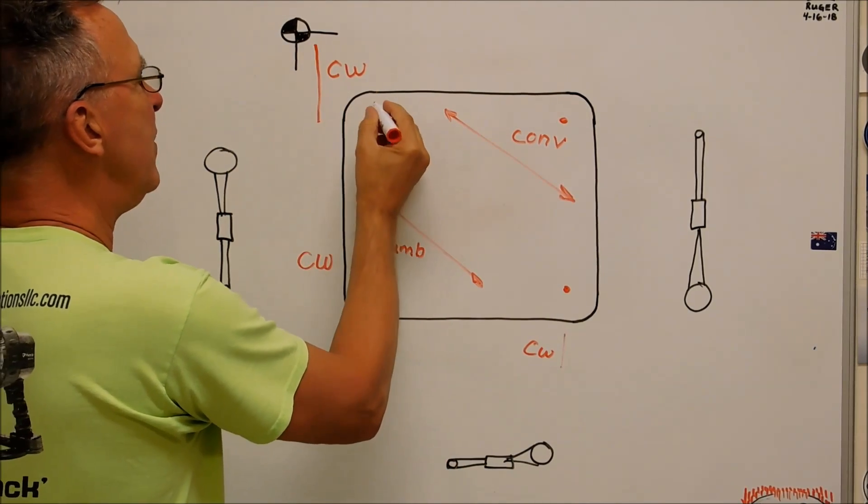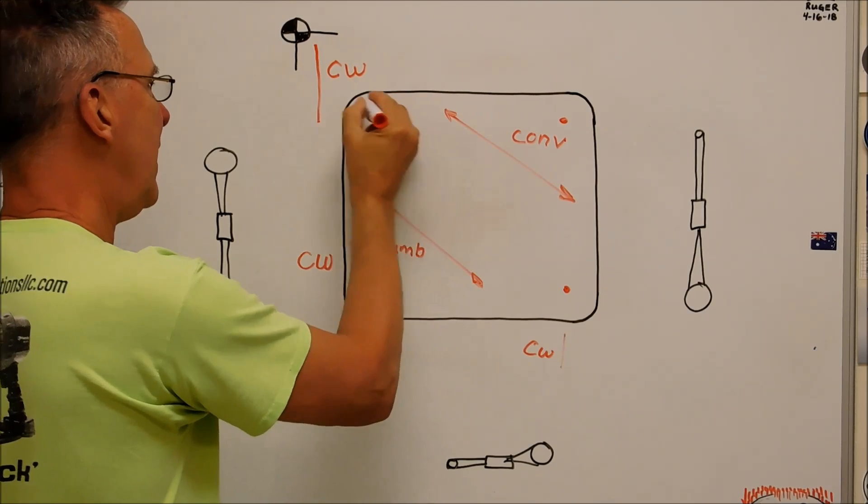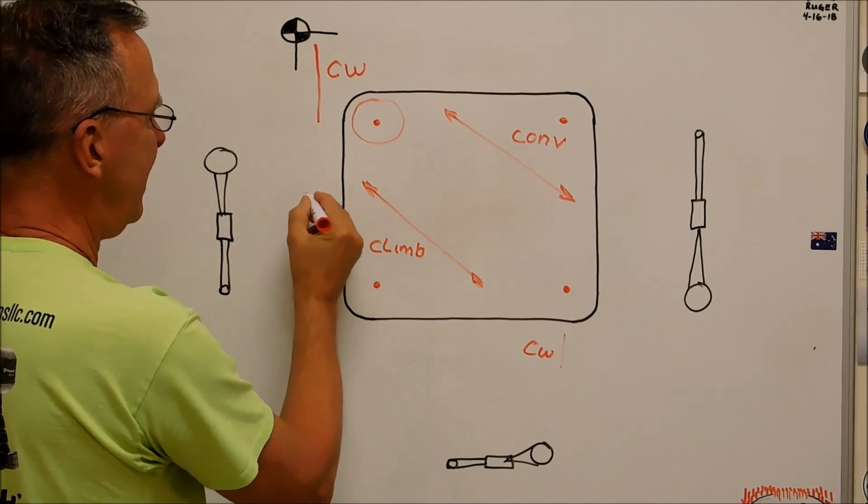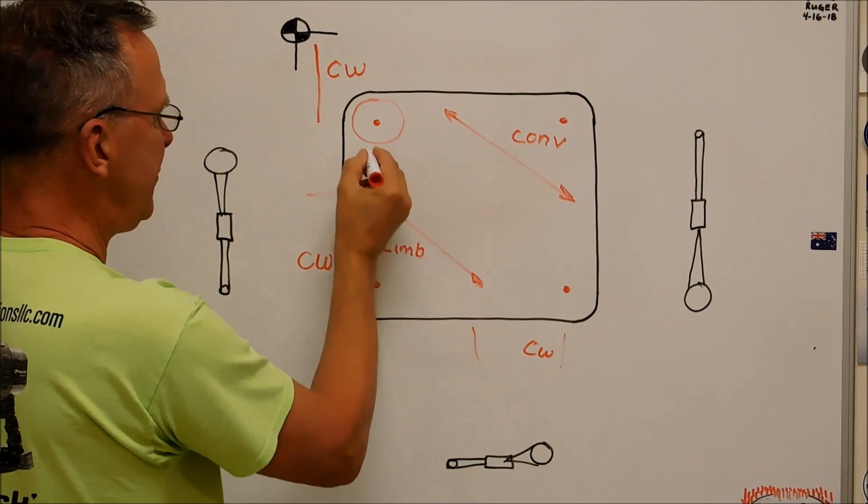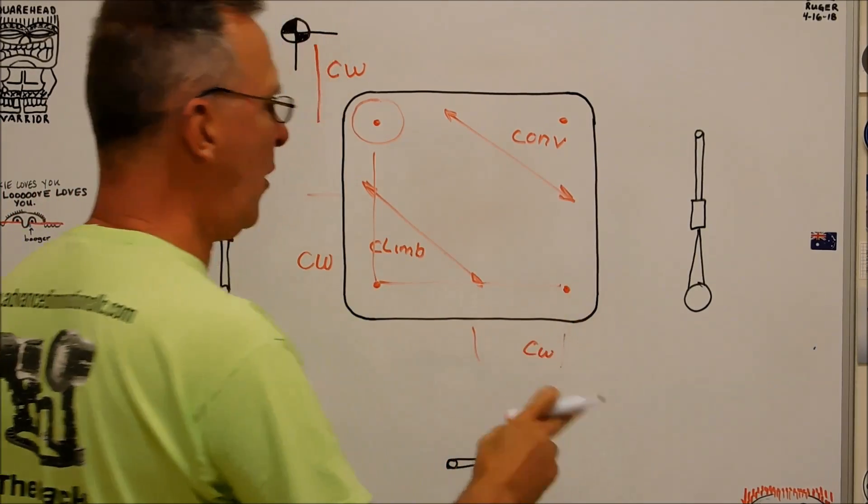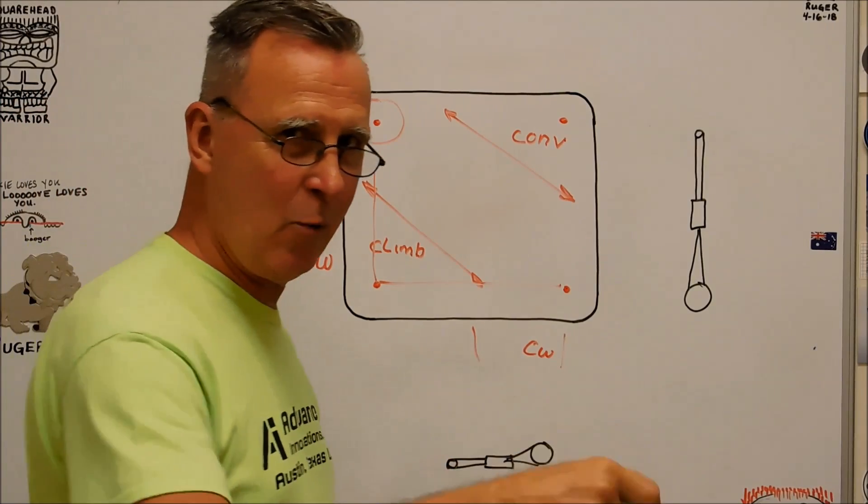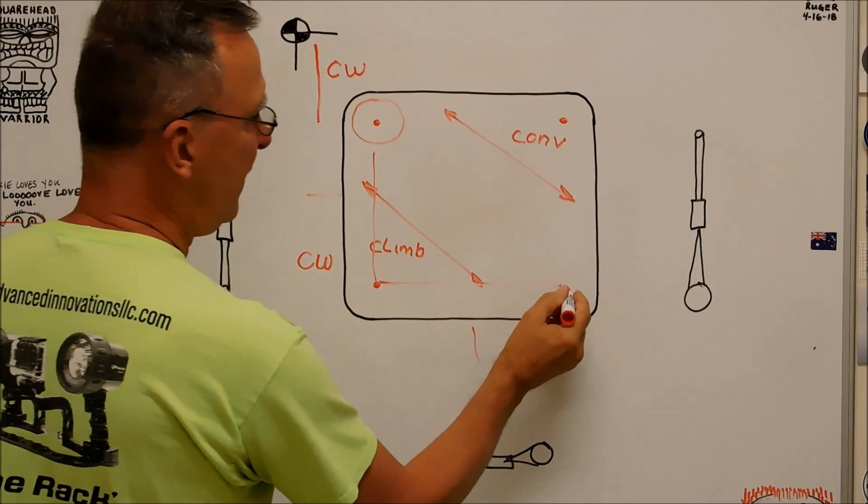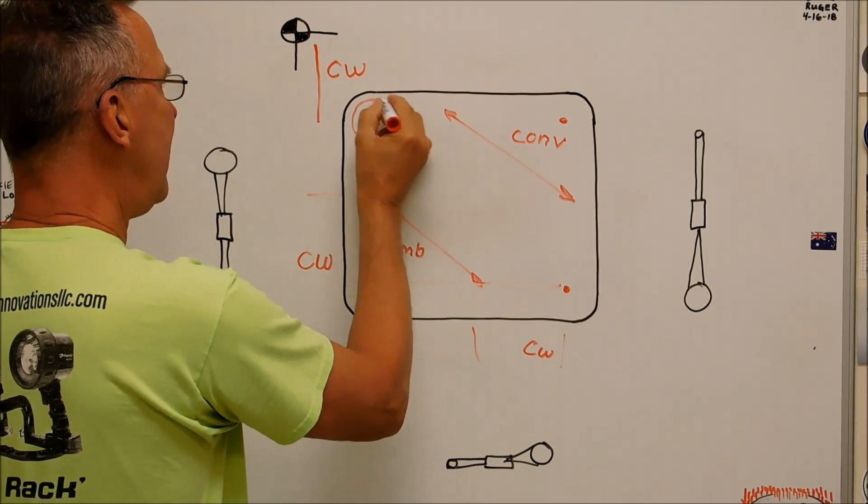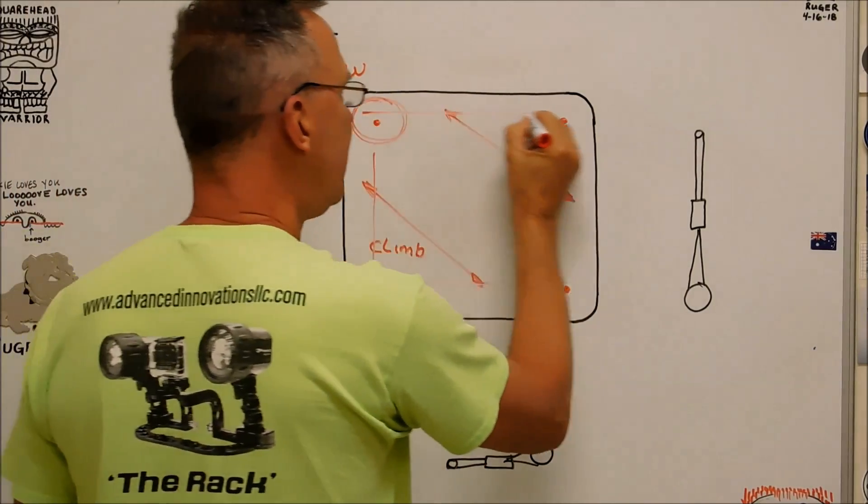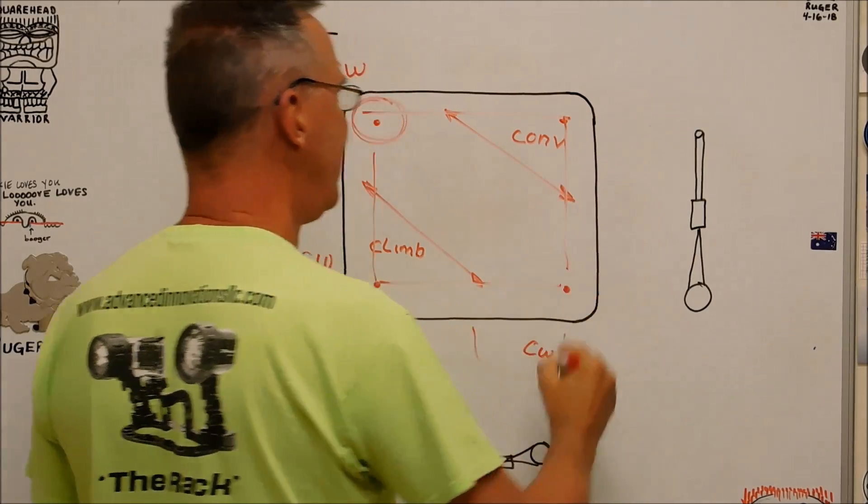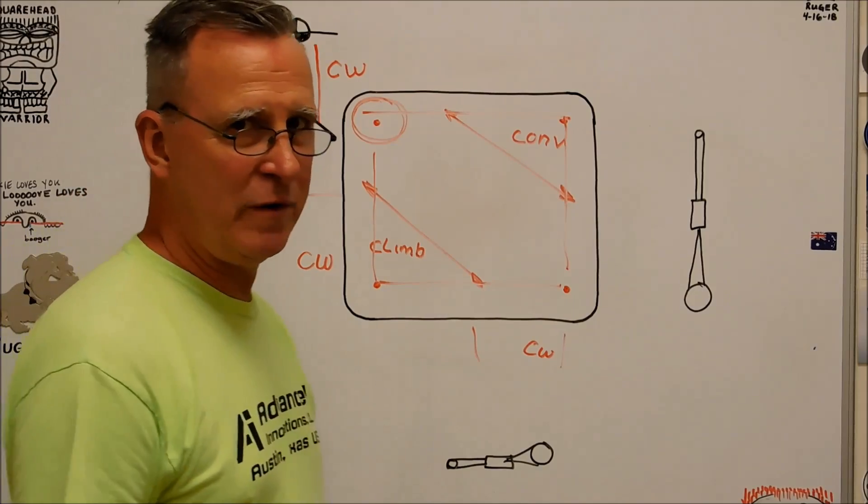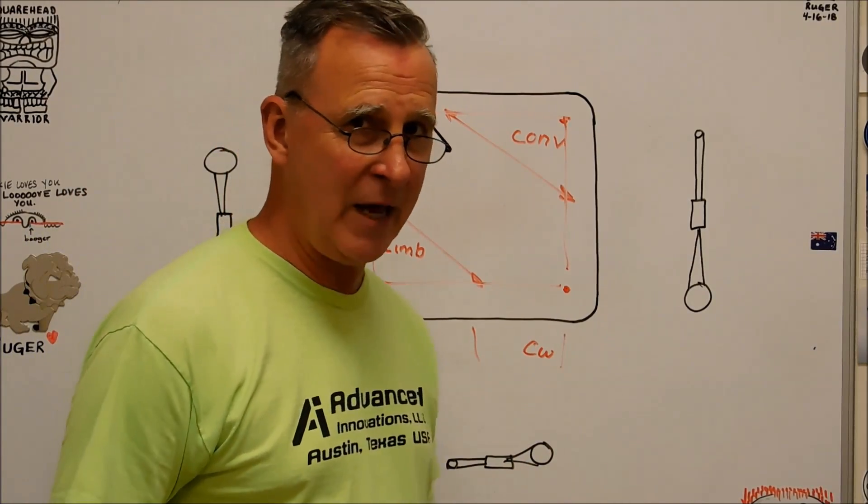Once you've moved over and you've got your tool right here, you climb cut this surface and this surface. You move down and across. Both moves are clockwise dial moves. Both moves. Lift here. Put it back over here. Conventional cut this side, conventional cut this side. Both moves are clockwise moves. You don't have to worry about backlash, ever.